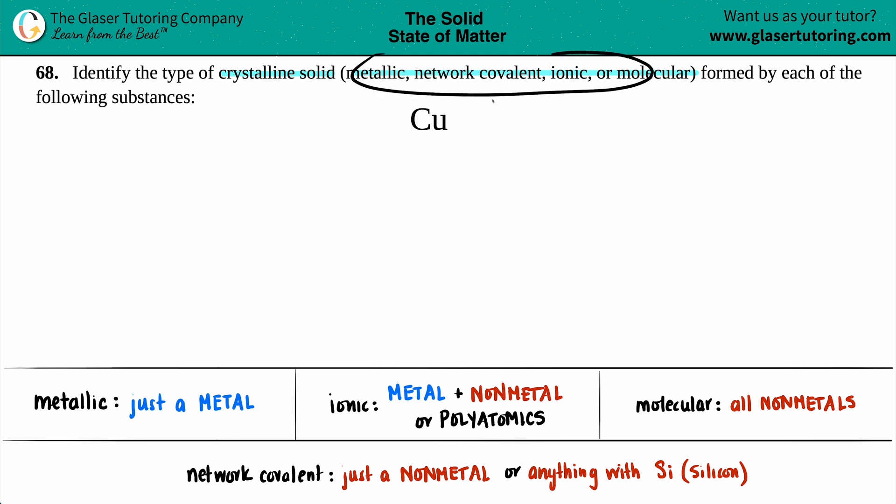So we'll just work from left to right. If your substance in question is a metallic crystalline solid, you will just see a metal. The word metal is in the word metallic, so you're just looking for a metal. And aha, Cu - that's copper!